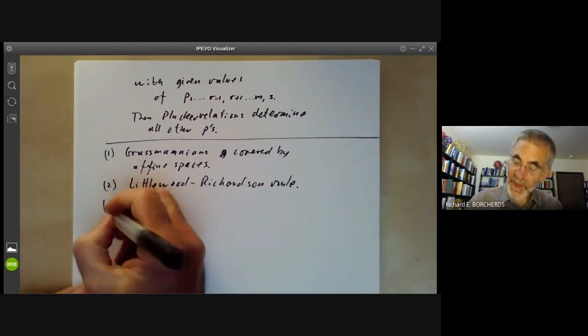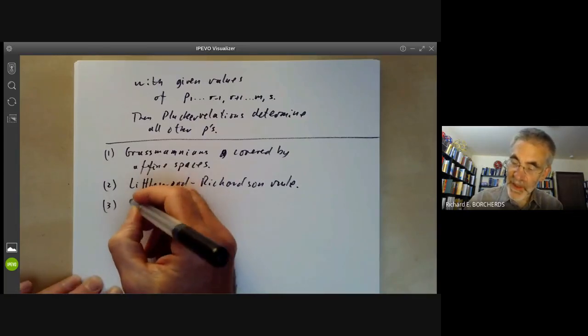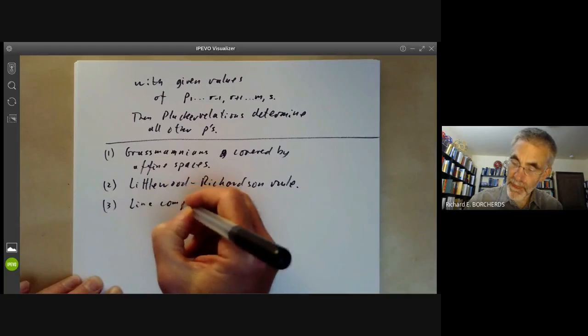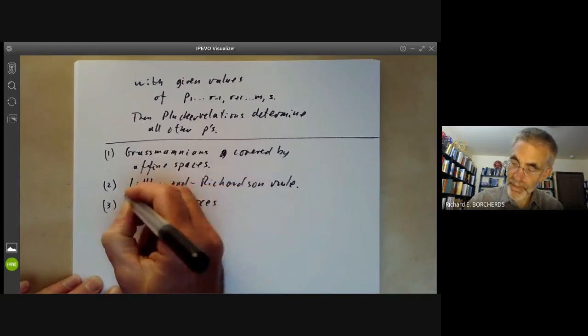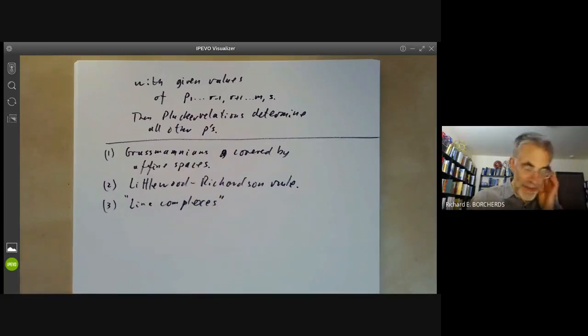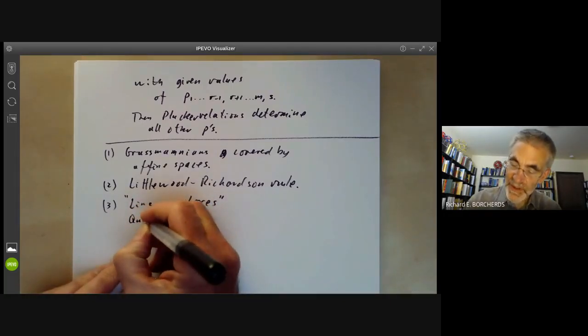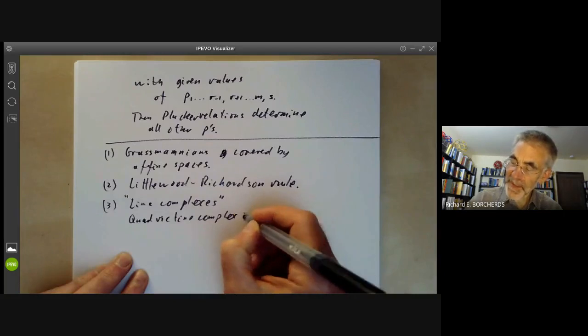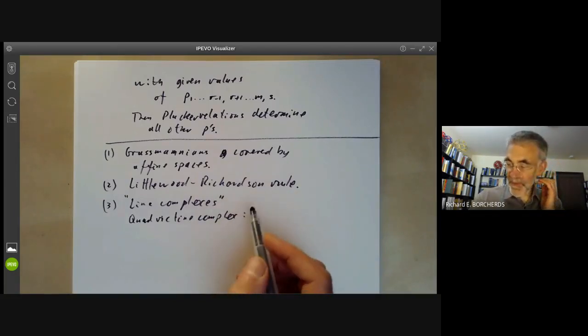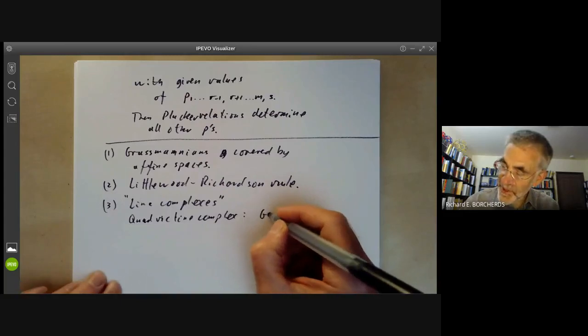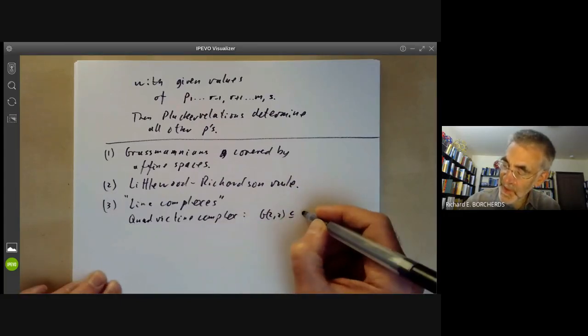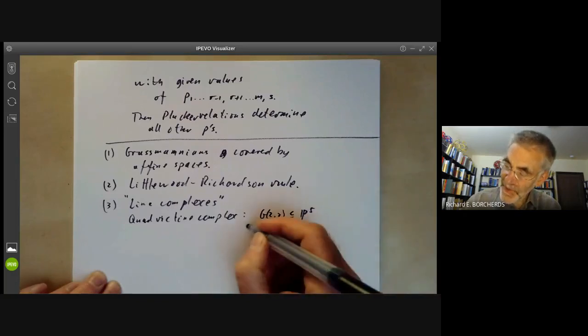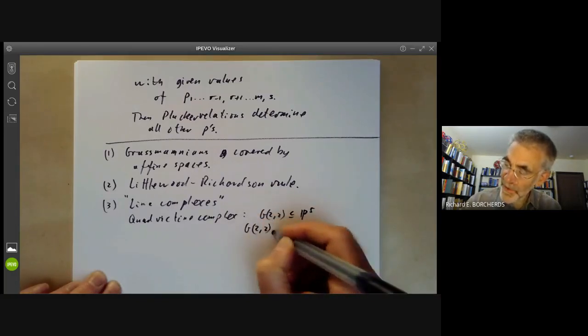And Grassmannians also turn up in something called the Line Complexes. So Line Complexes are certain varieties with a very rich structure. For instance, the Quadric Line Complex is given by, well, you take the Grassmannian G22, which you think of as being a subset of P5, and you just intersect G22 with a Quadric.